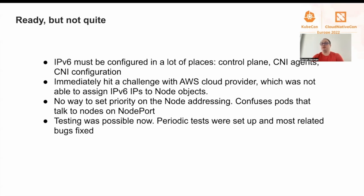IPv6 addresses were not prioritized as we expected. After many debates, the decision was that the cloud controller should send the IPv6 addresses in the order that it desired them to be used, so it basically decided the priority. We fixed that and tests were possible. We created periodic tests, and together with other developers, we fixed all the issues we found — mostly testing issues, but there were some minor issues in Kubernetes too.